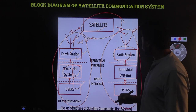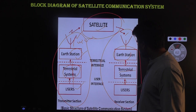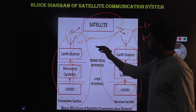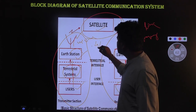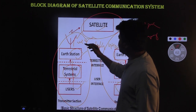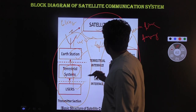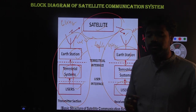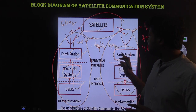Through the terrestrial network, the earth station resends the signal to the user and we get the information at the receiver section. Here we use uplink and downlink frequencies: 6/4 GHz frequency band — 6 GHz for uplink and 4 GHz for downlink. The reason there is a difference between uplink and downlink frequency is to avoid interference between the signals. Uplink frequency is always higher than downlink frequency.